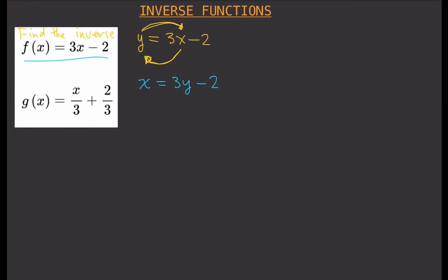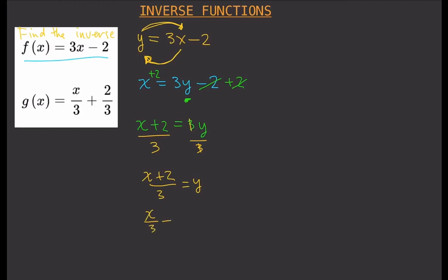Then you solve for y — you need to isolate y. To do that, add 2 to both sides of the equation to cancel out the negative 2, giving x plus 2 equals 3y. Then divide both sides by 3 to cancel the 3, giving y equals x plus 2 over 3. You can distribute the denominator to get y equals x over 3 plus 2 over 3.